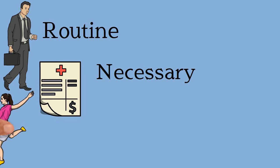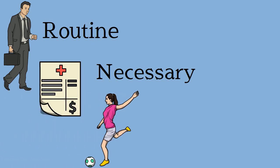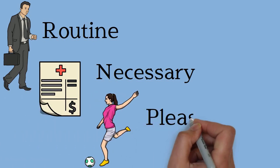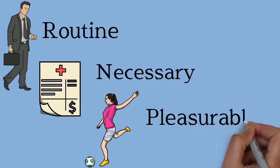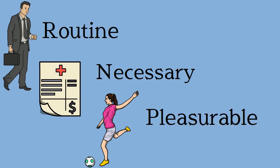Lastly, pleasurable activities are those we enjoy doing — depending on the individual, these could be anything from seeing friends to exercising to sitting at home with a book. When discussing the three types of activities, make sure you're asking questions to check understanding and stop it from feeling like a lecture. For instance, before defining pleasurable activities you could ask: what do you think we mean by pleasurable activities? Remember to also elicit examples from the patient for each activity type.